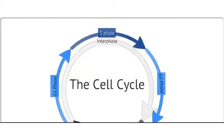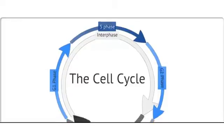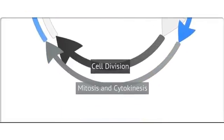Interphase can be broken into three phases: the G1 phase, the S phase, and the G2 phase. Cell division can be broken into two phases: mitosis and cytokinesis.